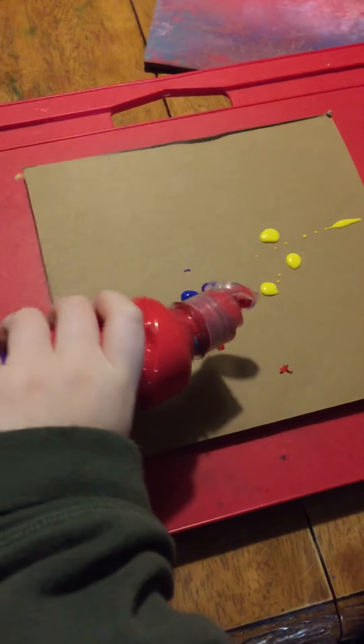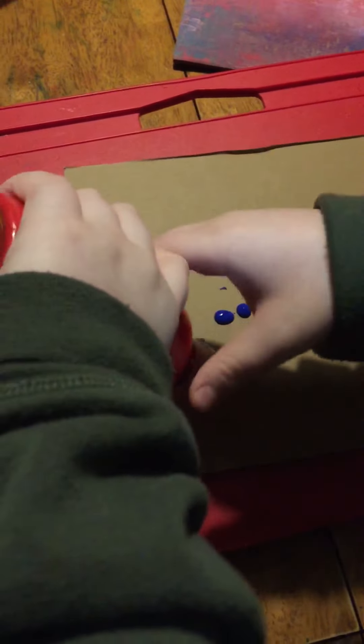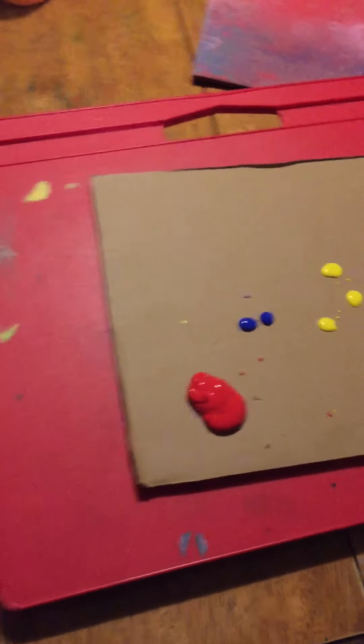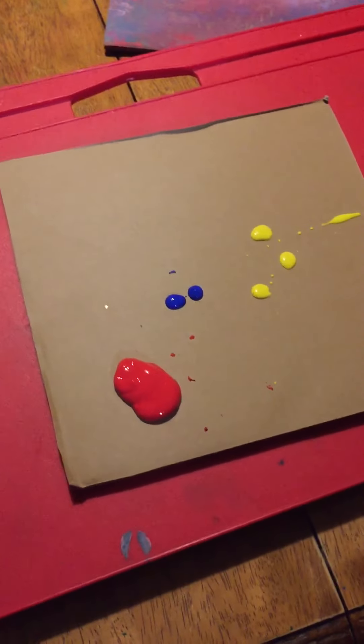The first thing you're gonna do is take your cardboard or paper, whichever you choose, and add some paint drops to it. You can add as little or as much paint as you would like, or as many colors or a few colors. Oops, we got a little bit too much red right there.